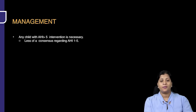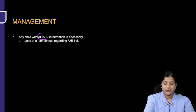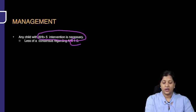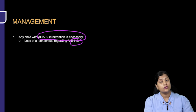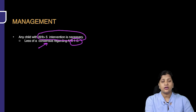How do we manage a patient? Any child with AHI more than 5, intervention is absolutely necessary. There is lesser consensus when the AHI is between 1 to 5. Today we say AHI of 1 is also pathological, but what sort of intervention — whether medical or surgical — there is less consensus on that.